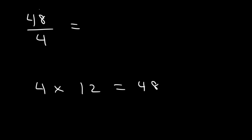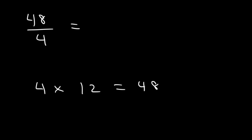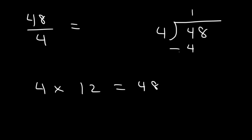You can also use long division to get the answer. 4 goes into 4 one time. Bring down the 8 — 4 goes into 8 two times. The remainder is 0. So 48 divided by 4 is 12.